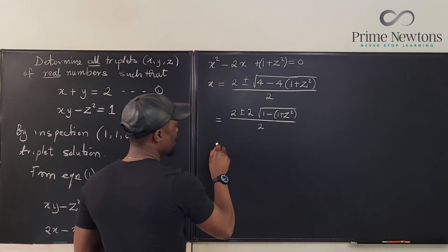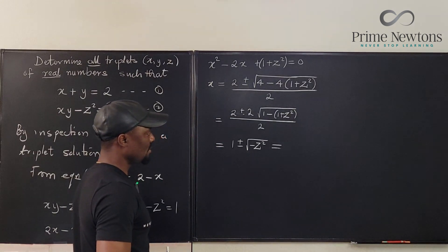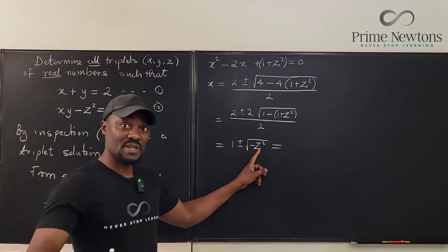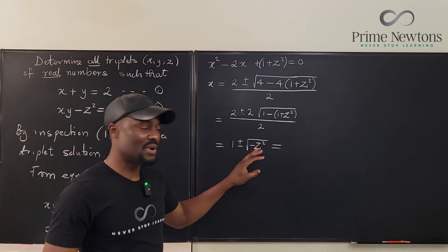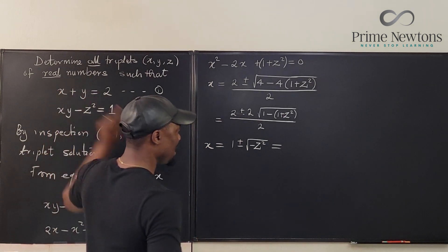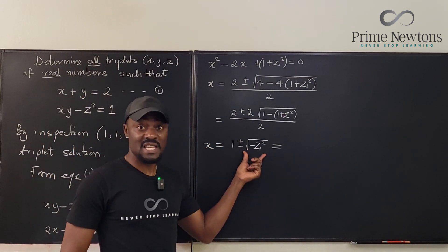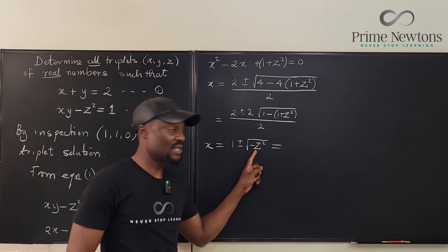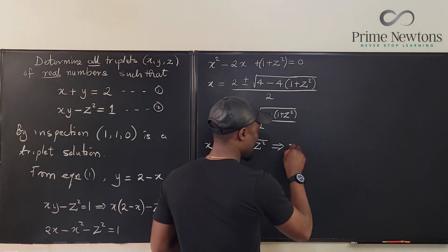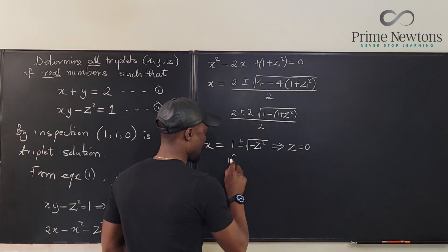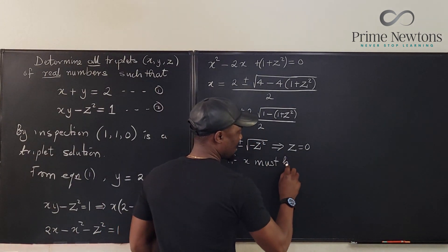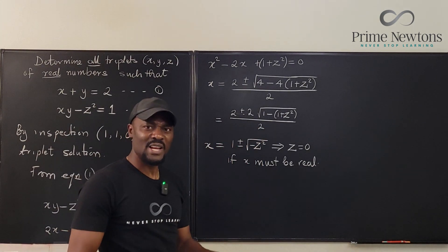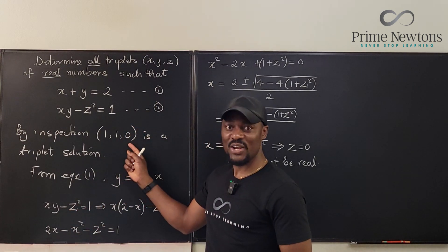Clearly, this will cancel, so you have just 1, so this will sum to 1 plus or minus imaginary z. Remember, z squared is positive, so minus z squared is a negative number, and we said x is supposed to be real. If x has to be real, then it cannot have any imaginary part, so this part must be 0, which means z must be 0 if x is real. The imaginary part will just disappear, and you have x equals 1, and it looks like this is the exact thing we got by inspection.